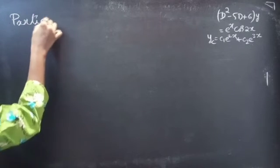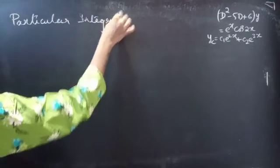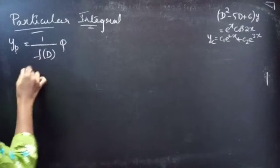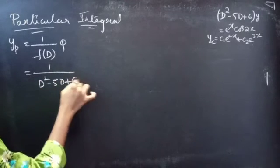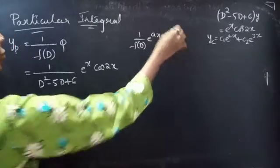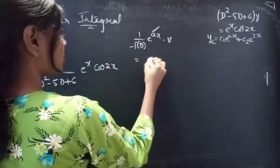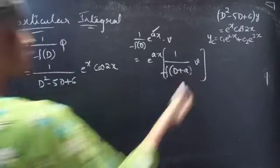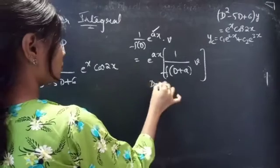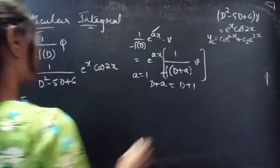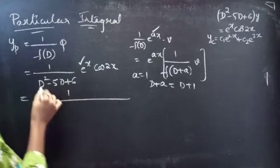Now let's find yp — the particular integral. We find the particular integral using 1/f(D) · Q. We have f(D) = D² - 5D + 6 and Q = e^x cos2x. This is of the form 1/f(D) · e^(ax) · v. We can shift e^(ax) towards the left by replacing D with D + a. Comparing e^x with e^(ax), a = 1. So we find D + 1. Shift e^x towards the left by replacing D with D + 1.